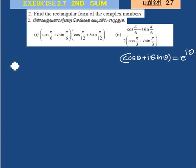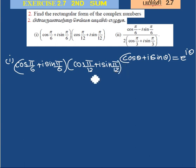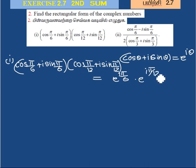For the first sum, we have cos(5π/6) plus i sin(5π/6), and cos(5π/12) plus i sin(5π/12). Using Euler's formula, this becomes e to the power i(5π/6) multiplied by e to the power i(5π/12).